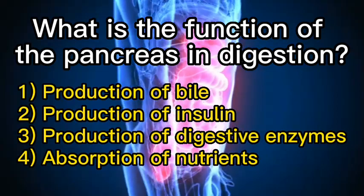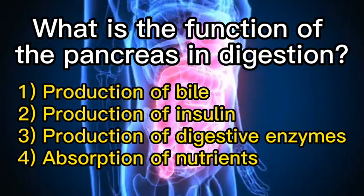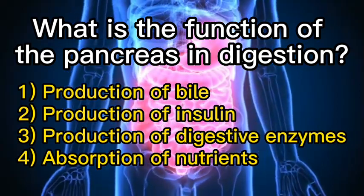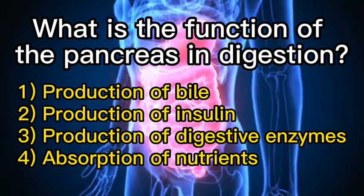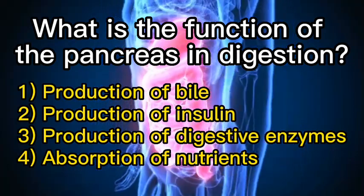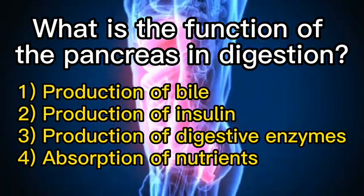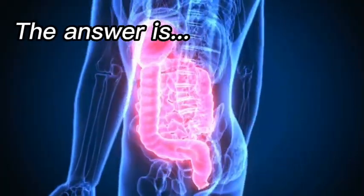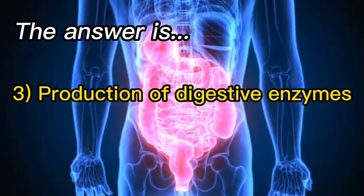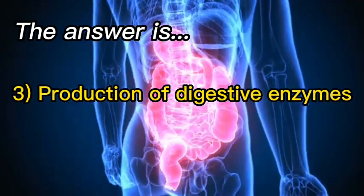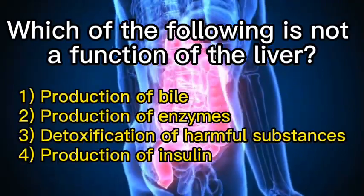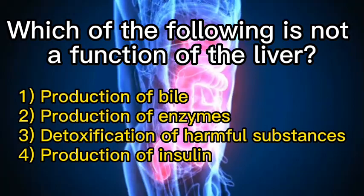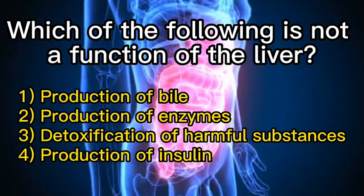What is the function of the pancreas in digestion? One: production of bile. Two: production of insulin. Three: production of digestive enzymes. Four: absorption of nutrients. The answer is three, production of digestive enzymes.